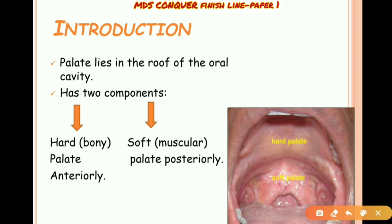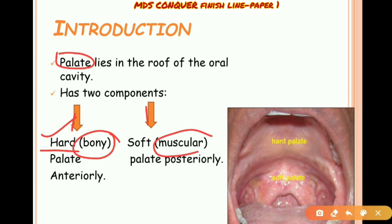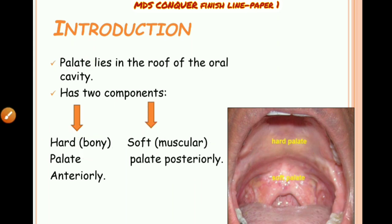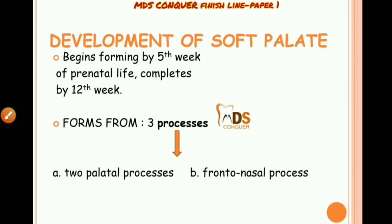The palate has two components: the bony part called the hard palate, and the muscular part called the soft palate, which is present posteriorly. You can see here the hard palate and the soft palate.